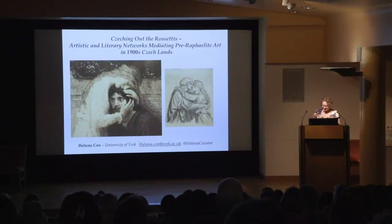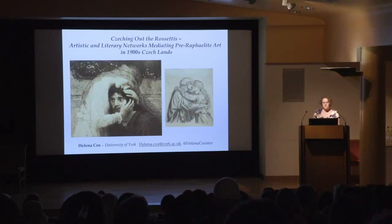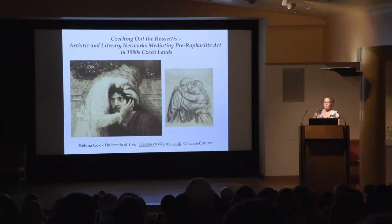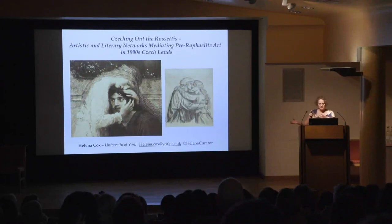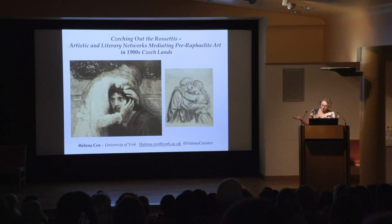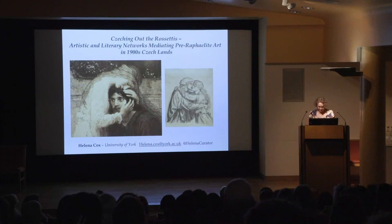This needs to be understood in a wider international context. There were multiple international influences over the area of the Czech lands. While I will be focusing on Britain, at the same time there was a massive influx of artistic inspiration from France, and German culture was incredibly dominant. So I will be handpicking the predominantly Pre-Raphaelite inspirations, but do bear in mind that this is in a very international context.